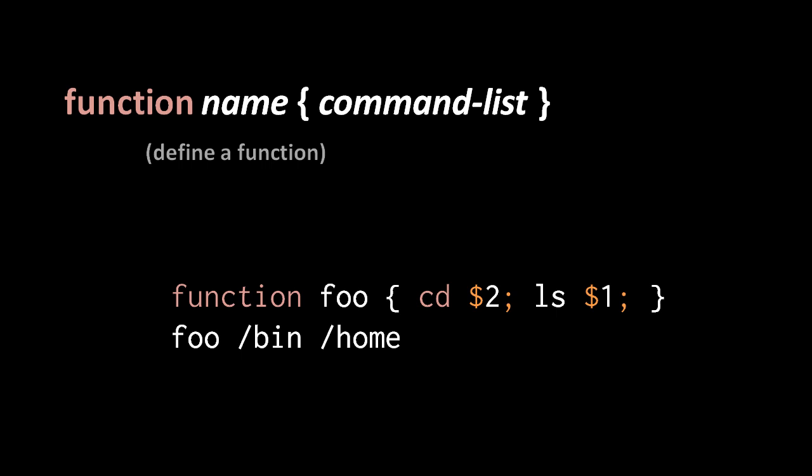When we define a function we don't specify parameter names. Instead, arguments passed to a function are always assigned to the special parameter names 1, 2, 3, 4, 5, and so forth. In the body of a function we get the first argument with $1, the second with $2, the third with $3, and so on.